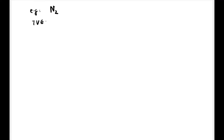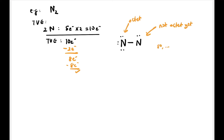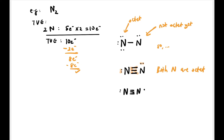Next: N₂. Two nitrogen atoms, each with 5 electrons, gives a TVE of 10. We draw N–N with one bond, using 2 electrons, leaving 8. We place all 8 electrons on the two N atoms, but neither is octet yet. We try a double bond — still not octet. So we make it a triple bond. Now: nitrogen 1, 2, 3, 4, 5, 6, 7, 8 — octet; and the other nitrogen — octet. N₂ has a triple covalent bond to become stable.